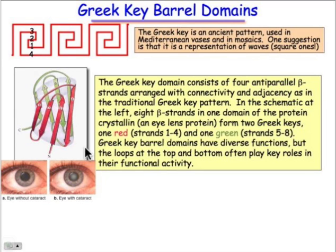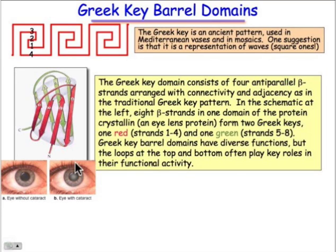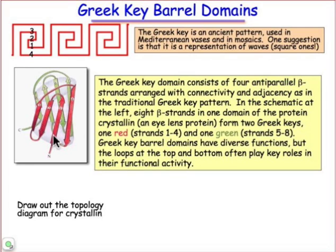The Greek key barrel is important in the eye lens protein — a protein that forms a very large volume fraction of the eye lens and helps adjust its optical properties. As you can see from the person with a cataract, degradation of that eye lens protein causes the proteins to aggregate together and form large objects that scatter light — that's the gist of what a cataract is. In this three-dimensional diagram of the eye lens protein, there are actually two Greek key motifs, colored red and green.